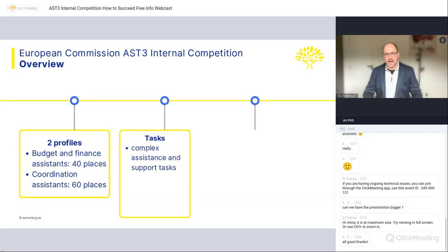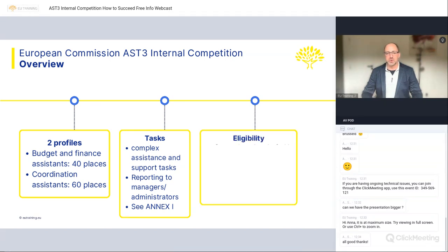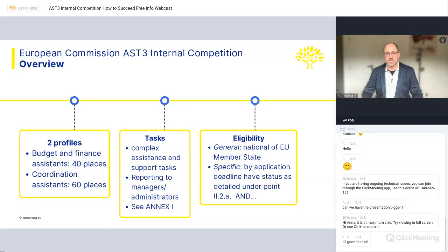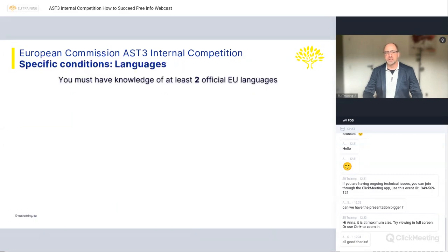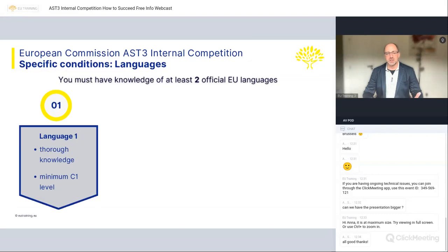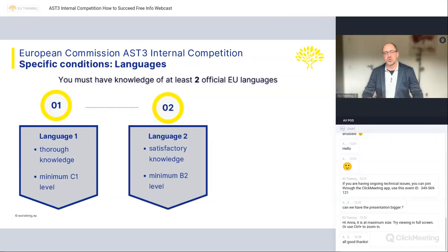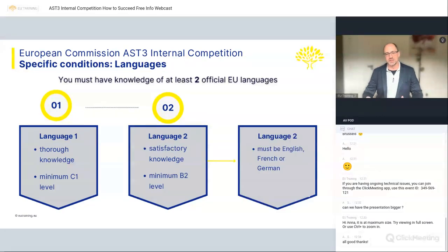When it comes to the tasks — complex assistance and support tasks reporting to managers and administrators — that's pretty standard. It's all in the annex of the notice of competition. Eligibility requires being a national of an EU member state, and there are other conditions depending on your current status with the Commission. On languages: you need at least two languages. Thorough knowledge — language one — can be any of the 24 official EU languages. Language two must be English, French, or German.